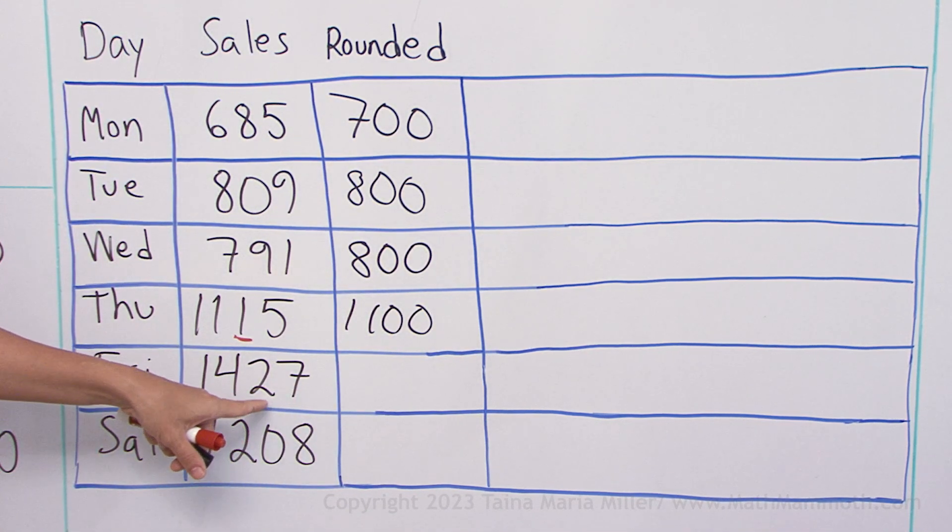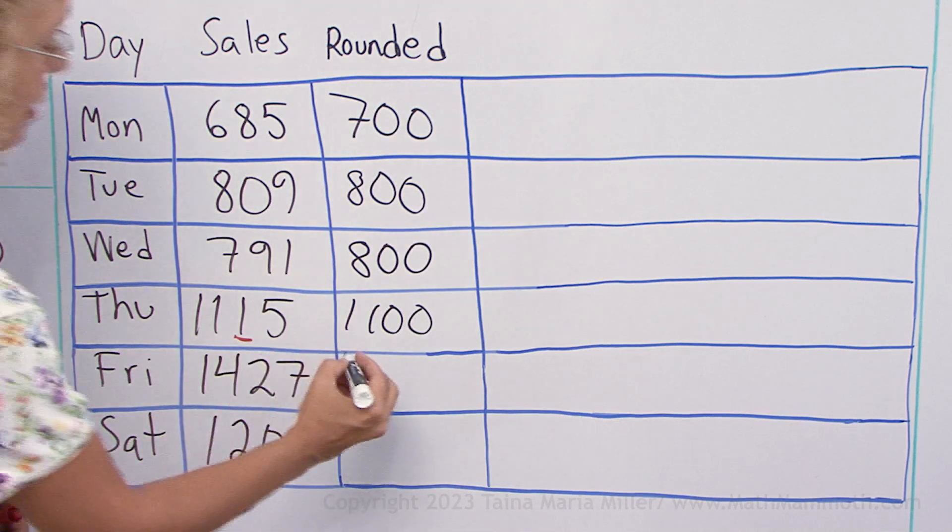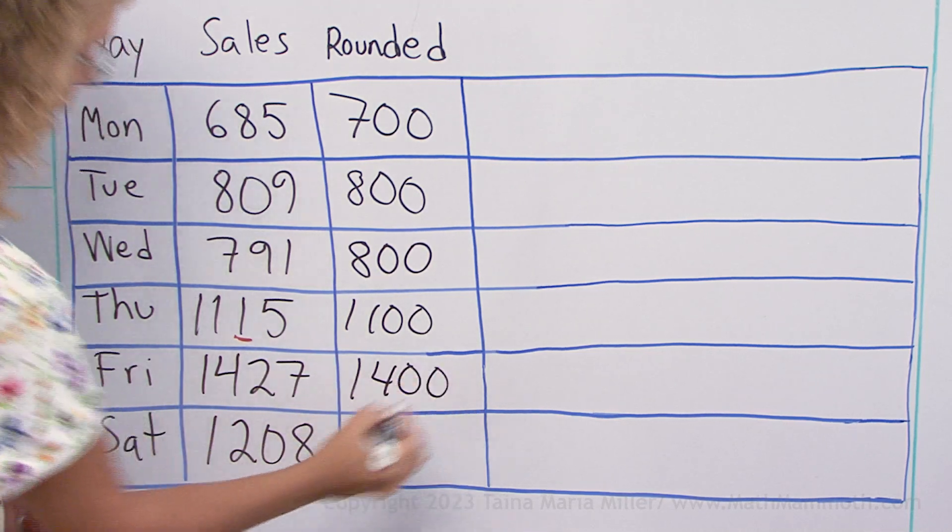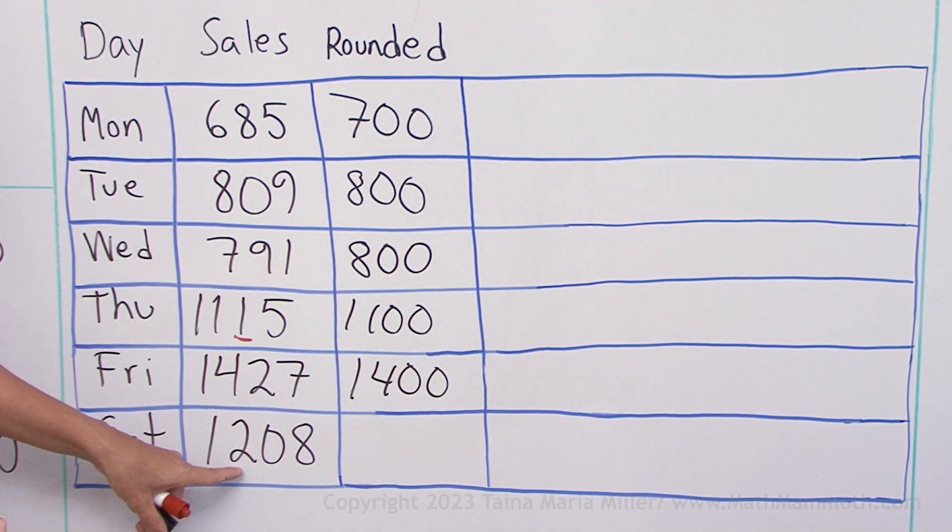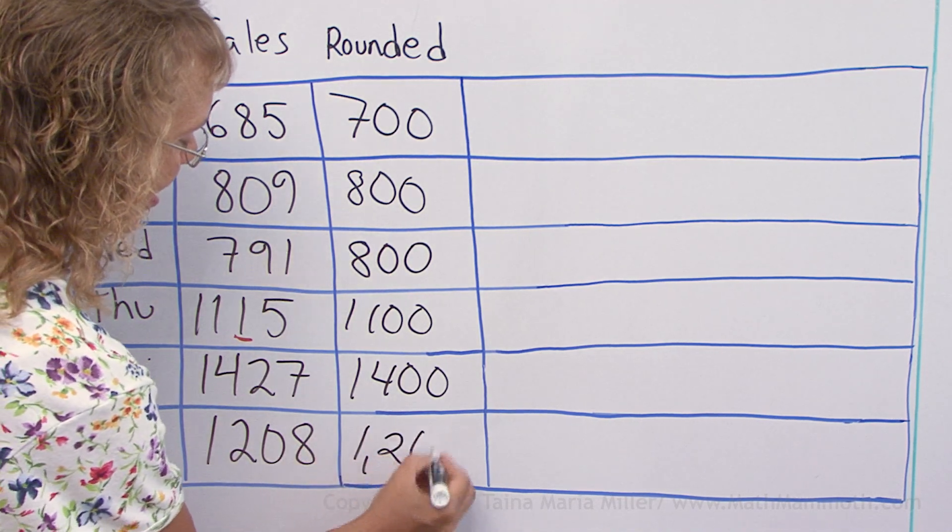1427. Two in the tens. Round down. And then 1208. No tens, so round down.